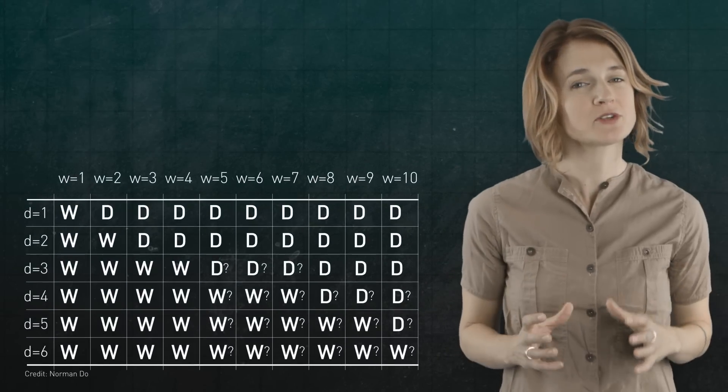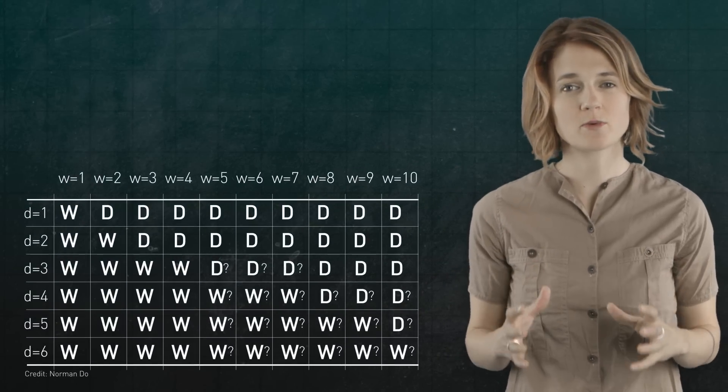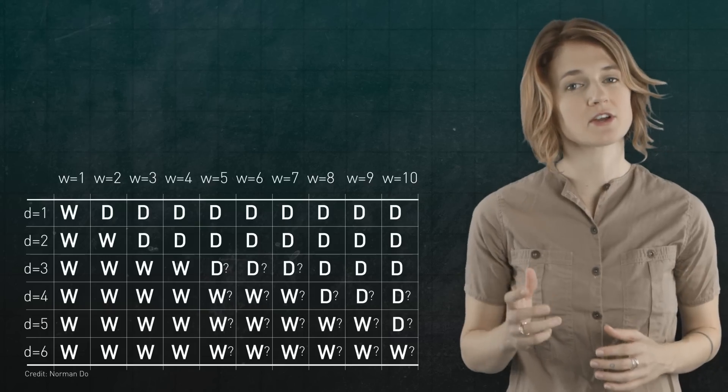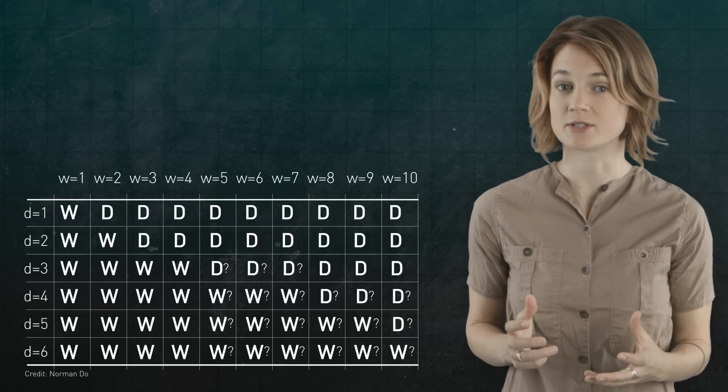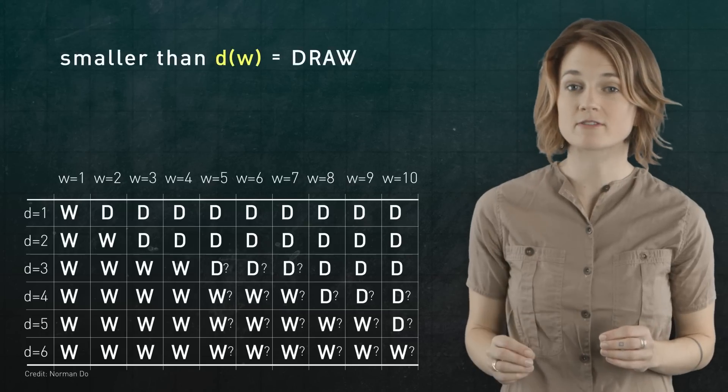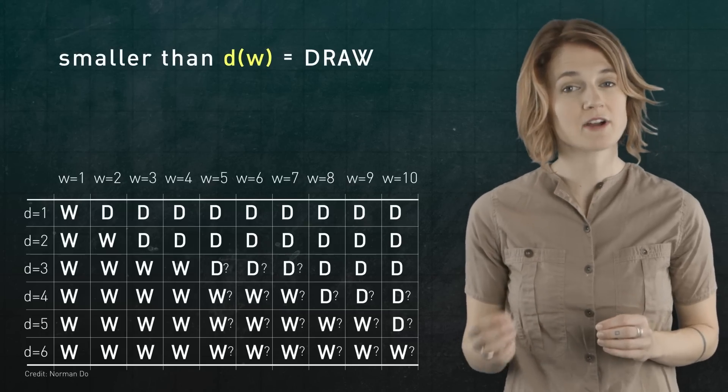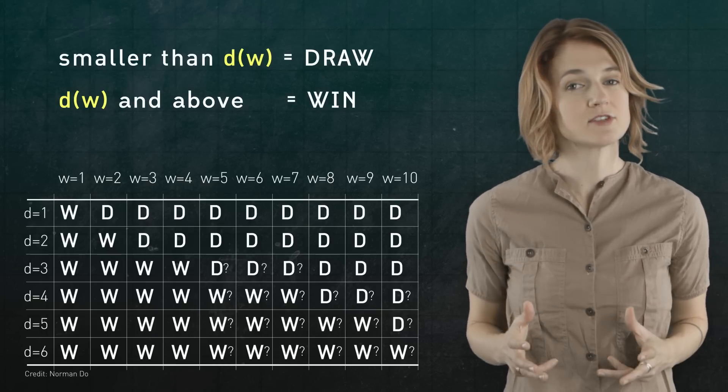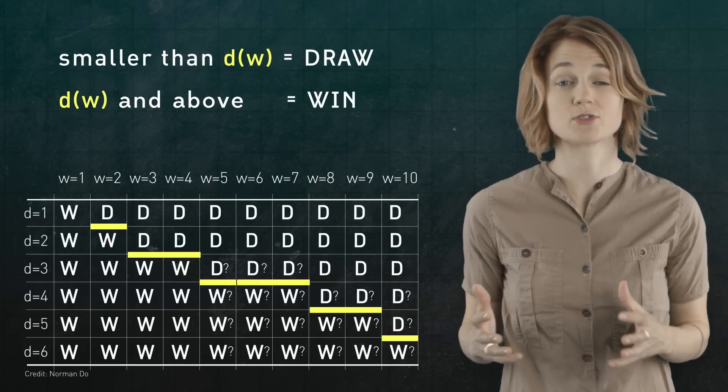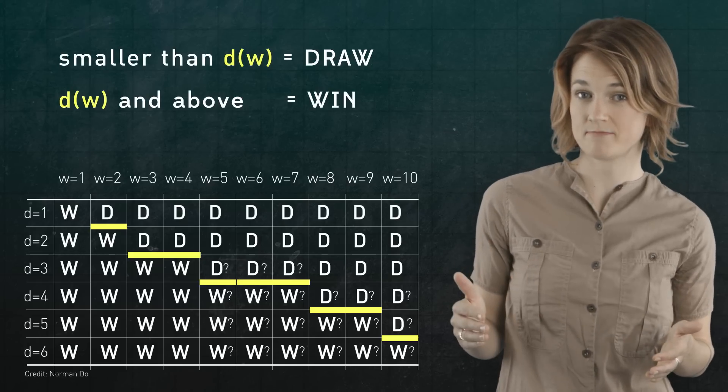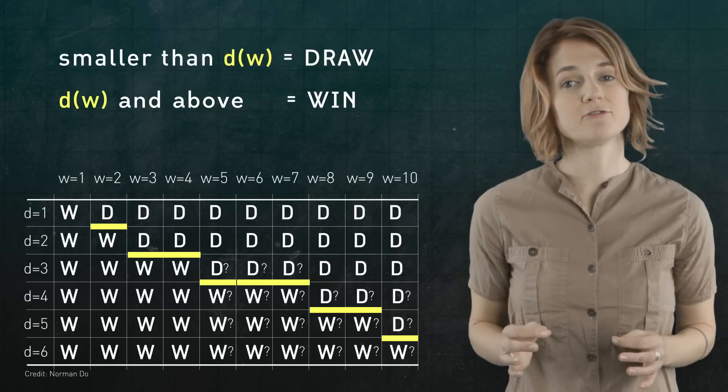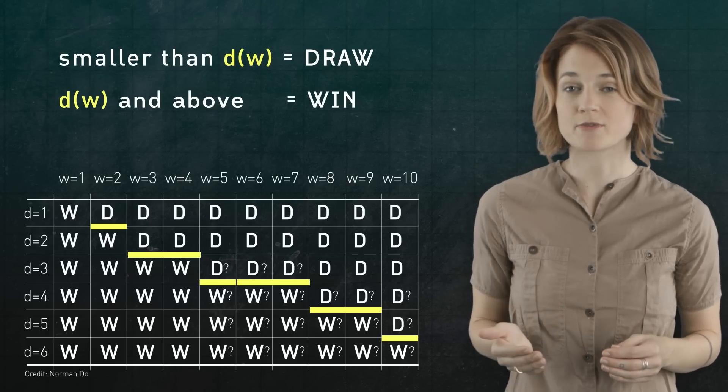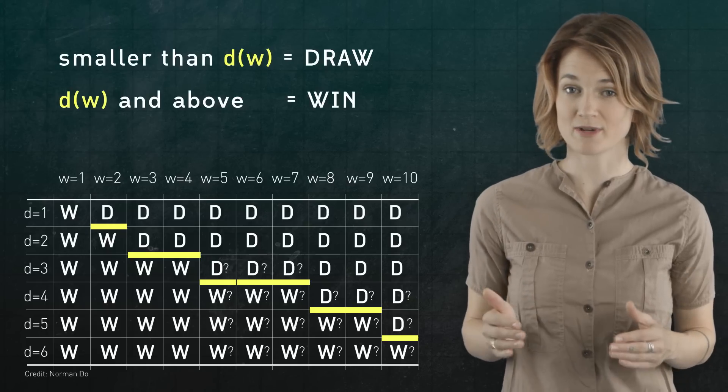Here's the big open question suggested by the chart. If we fix a width W, which means that we're focusing on one column, it appears that there exists some dimension, D of W, such that it's a draw in dimensions smaller than D of W and a win for X in dimensions D of W and above. In other words, D of W is the magic cutoff when a board of width W switches from being a draw to a win. For example, D of 4 is 3, meaning that for a board of width 4, it's a draw in dimensions below 3 and a win for X in dimensions 3 and above.